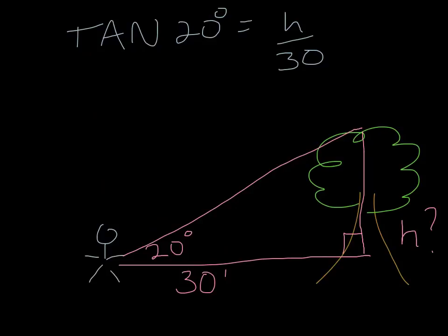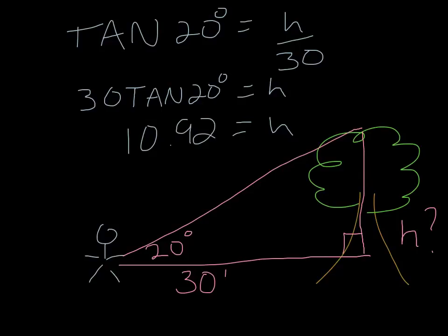So there's your tangent setup, tangent 20 degrees equals h over 30, tangent is opposite over adjacent. Cross multiply to solve, punch it into your calculator. So there's the cross multiply, multiply both sides by 30. And you get 10.9191, so 10.92 feet tall.